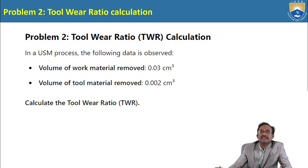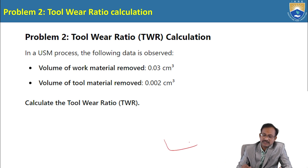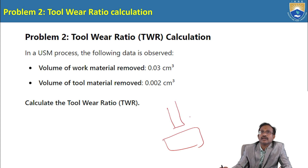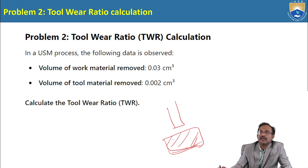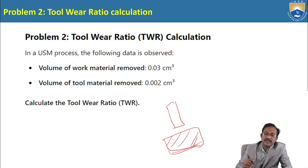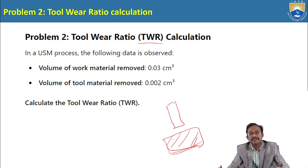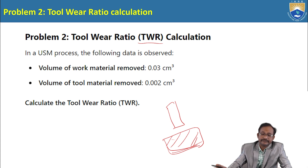Now let us discuss Problem 2: Tool Wear Ratio (TWR) calculation. The tool is also subject to wear during machining. TWR stands for tool wear ratio. In subsequent slides, TWR refers to tool wear ratio.